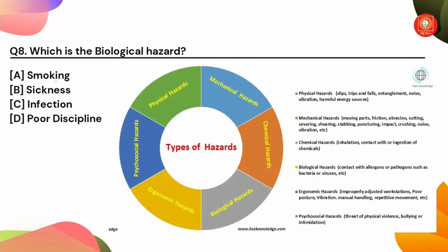Question number 8: which is a biological hazard? Smoking is a chemical hazard. Sickness is also a chemical hazard. Infection — we have an injury and antiseptic remedy — and getting a bacterial infection: option C is a biological hazard. Poor discipline is an ergonomic hazard.